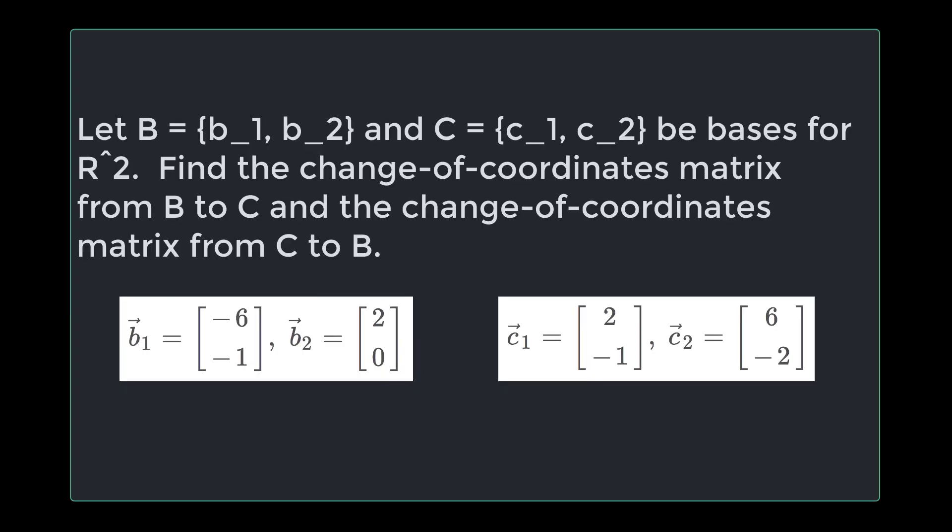The question we're working on today is: let B and C be bases for R². Find the change of coordinate matrix from B to C, and the change of coordinate matrix from C to B. Here B1 is the vector [0, -1], B2 is the vector [2, 0], C1 is the vector [2, -1], and C2 is the vector [6, -2].